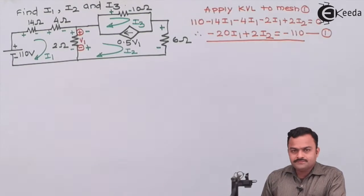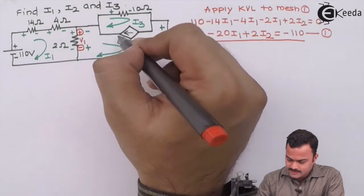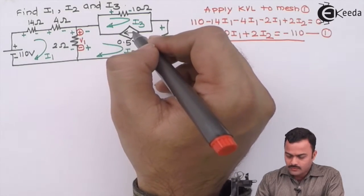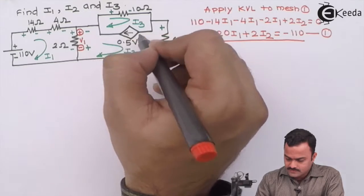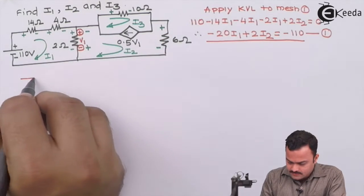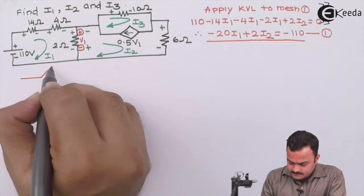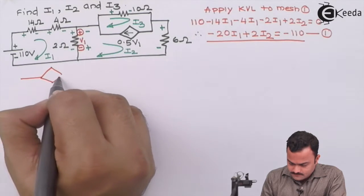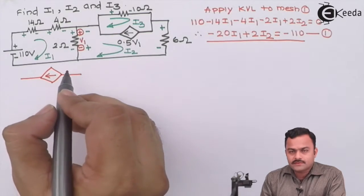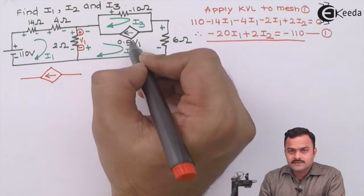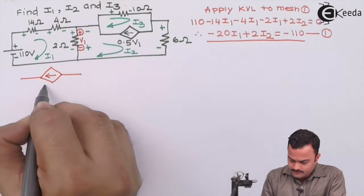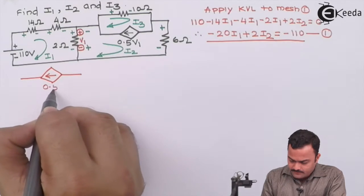For mesh 2, the problem is that there is a current source between two meshes, so we cannot apply KVL directly. What we do is take this current source outside the circuit and form a supermesh. This is a dependent current source — a voltage-controlled current source with value 0.5v1, where v1 controls it.